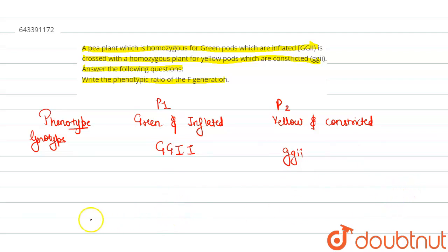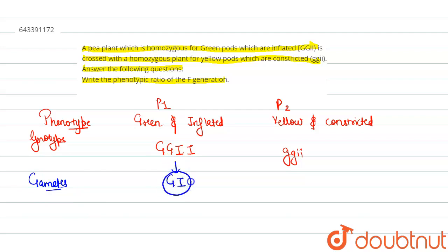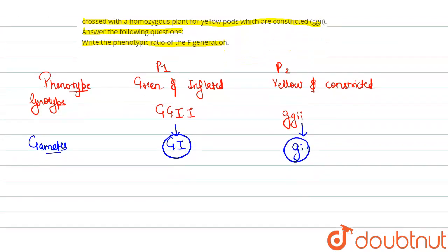The gametes are formed as follows: P1 produces gametes capital G capital I (GI), and P2 produces gametes small g small i (gi). These are the gametes. Now we will make the cross between these two plants, which is known as cross-pollination.